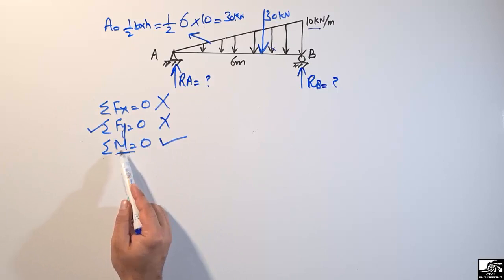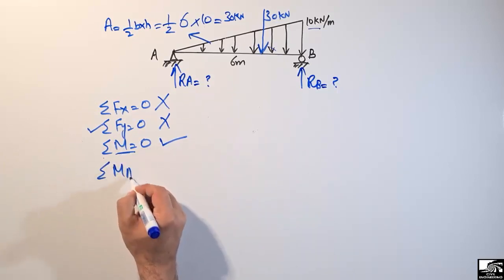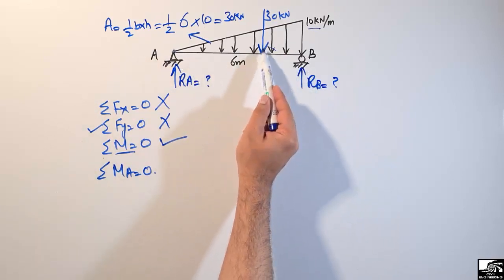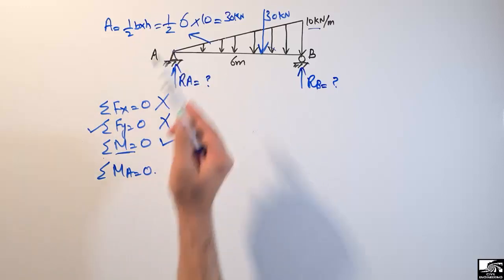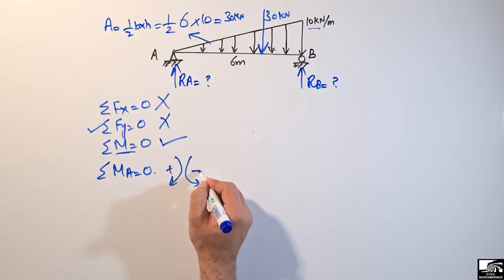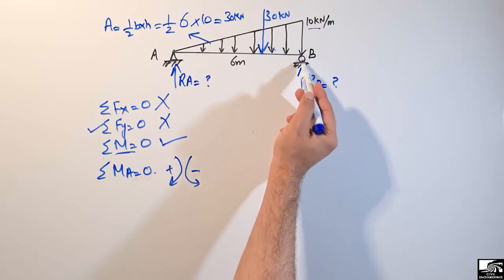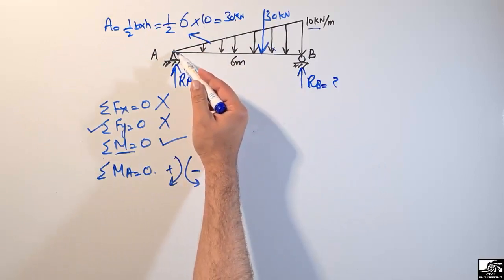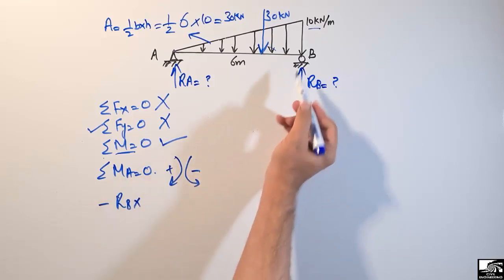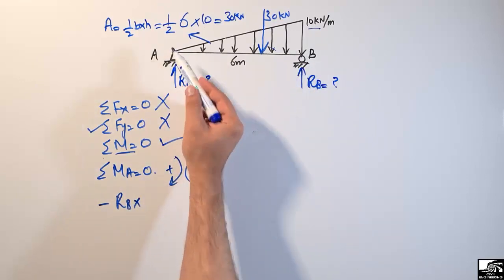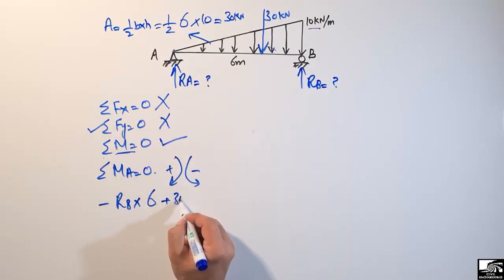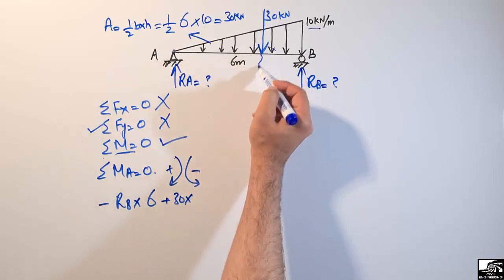Taking summation of moments at point A equal to zero: Rb creates a moment in the counterclockwise direction around A, so it is taken as negative — minus Rb multiplied by 6 meters (the distance from B to A). The 30 kilonewton load produces a clockwise moment about A, so it is taken as positive: plus 30 times its moment arm.